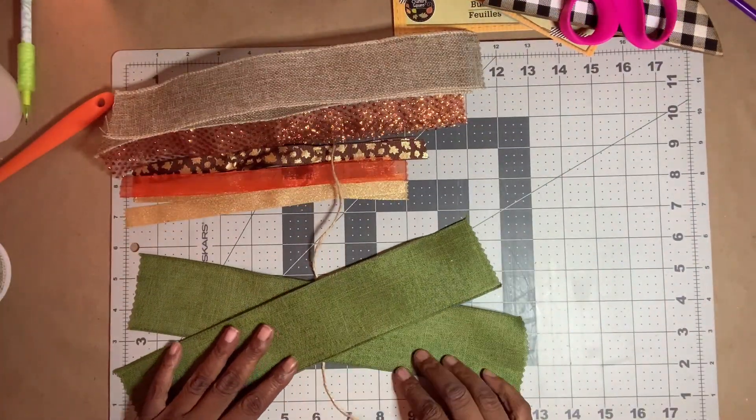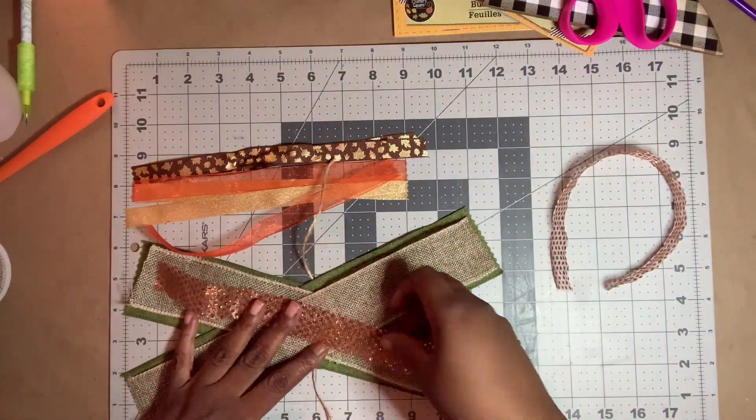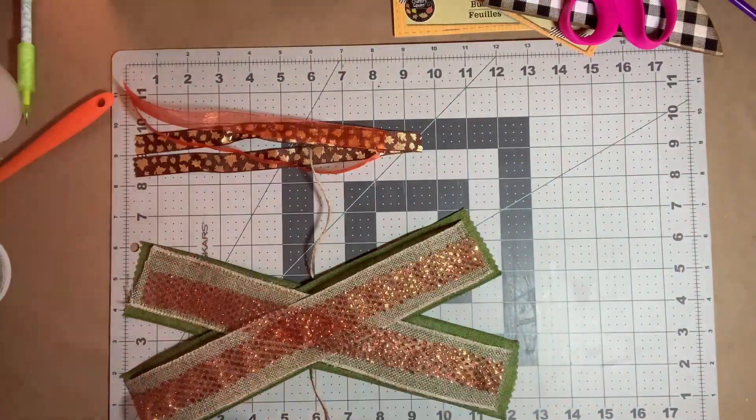Next, I put together a crisscross bow using fall colored ribbons. I don't show it here, but later I added some pitberry garland to the bow as well.